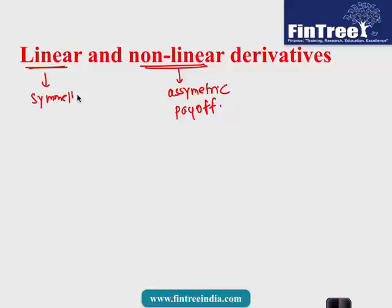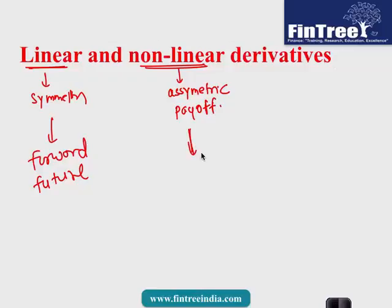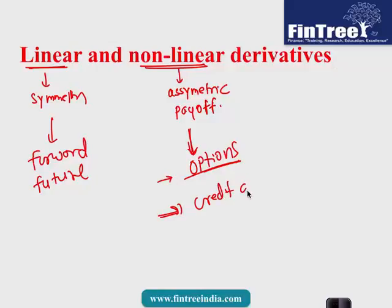You can put forward contracts into the linear segment, and you can also put futures contracts into the linear segment. In nonlinear, you can put option contracts because we know that they have asymmetrical payoff. You can also put most of the credit derivatives — not all of them, but most — into this segment.